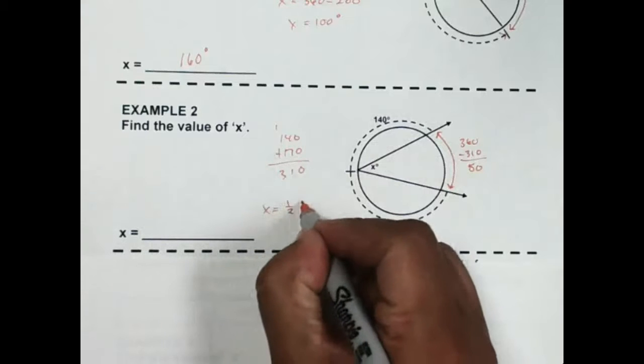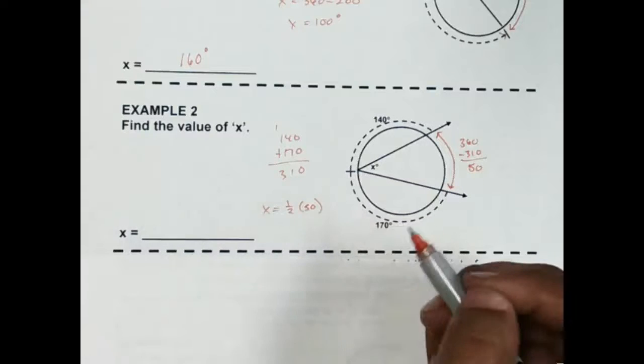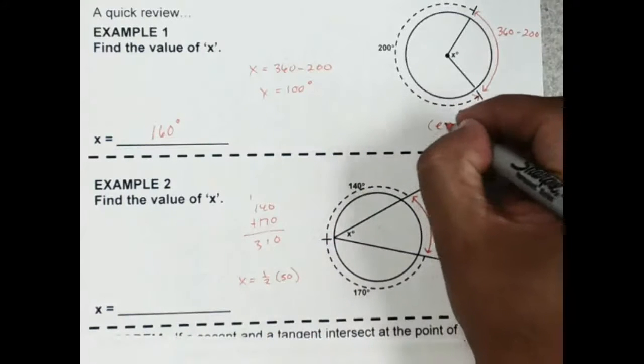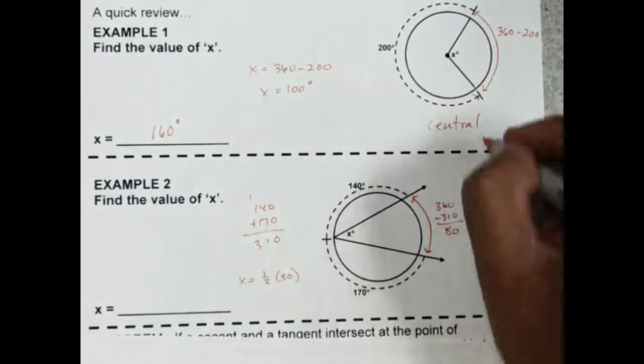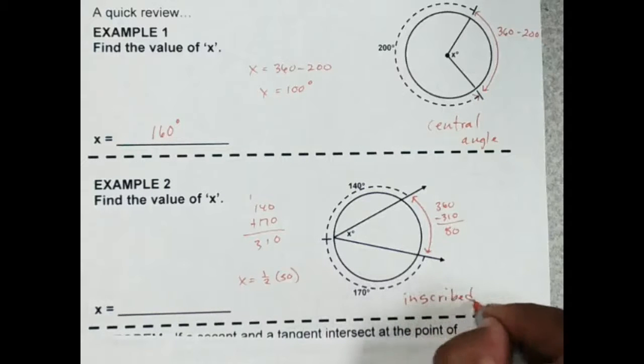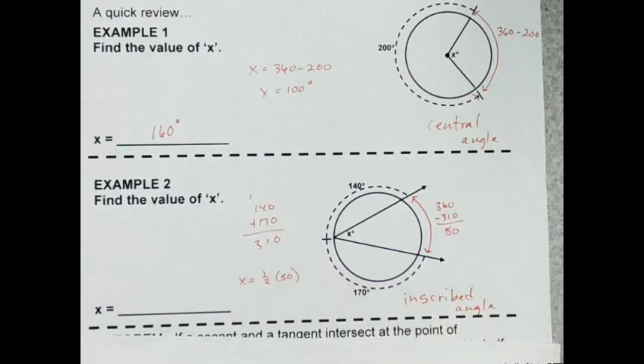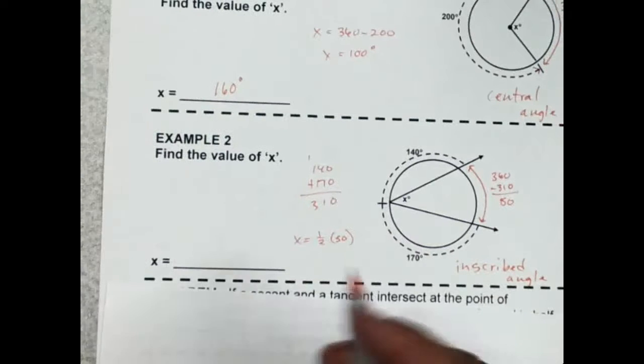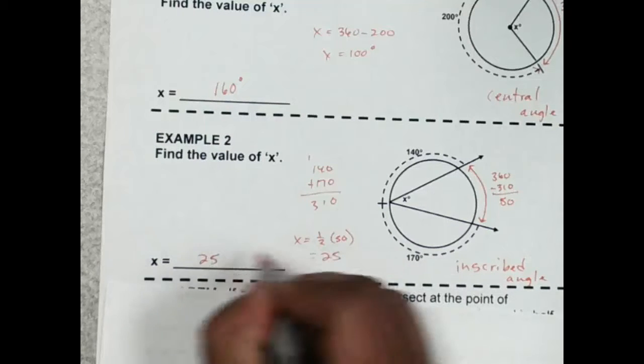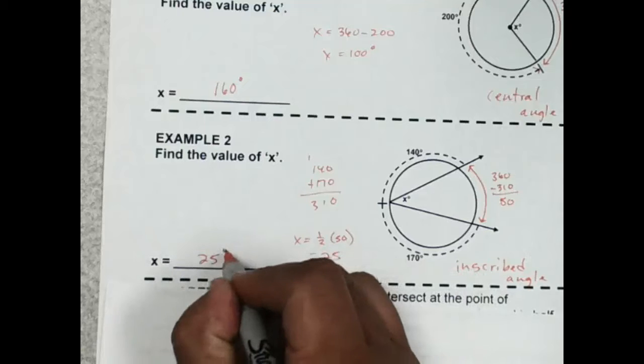half of 50, because this is an inscribed angle. This was called a central angle. So remember the difference between the two. So half of 50 is going to be 25. So x is 25 degrees.